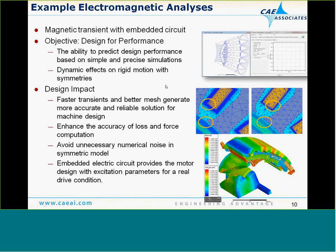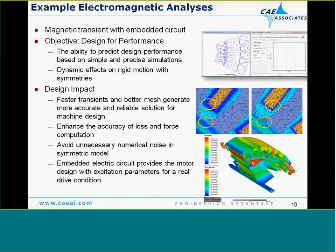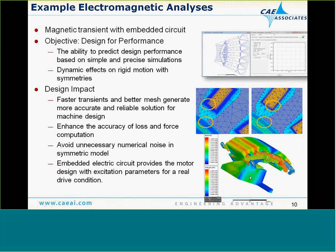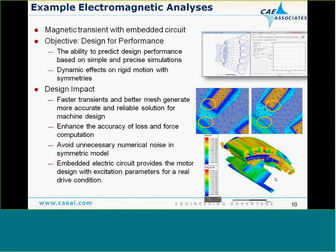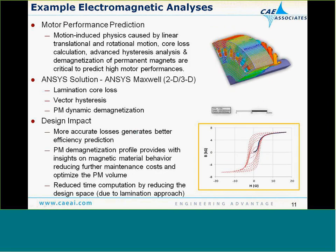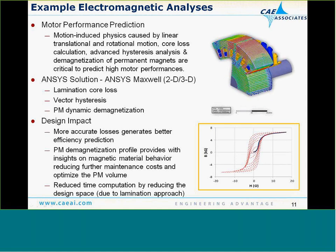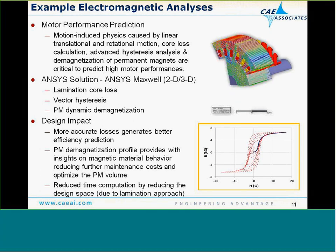Some examples of electromagnetic analyses in Maxwell: this is a magnetic transient with motion and an embedded circuit to drive the response of a motor. Most motion in Maxwell is prescribed — we solve the field response at different positions of the motor, all set up automatically, and can plot an animation of the full transient. This lets us predict motor performance including core loss, hysteresis, and demagnetization, leading to more efficient motor design.